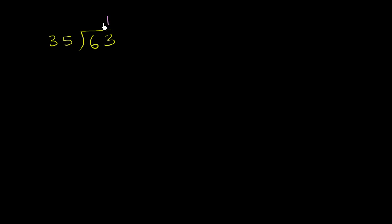So let me write that. It goes one time. 1 times 35 is 35. And then if we subtract, we can regroup up here. We can take a 10 from the 60, so it becomes a 50, give that 10 to the 3, so it becomes a 13. 13 minus 5 is 8. 5 minus 3 is 2.